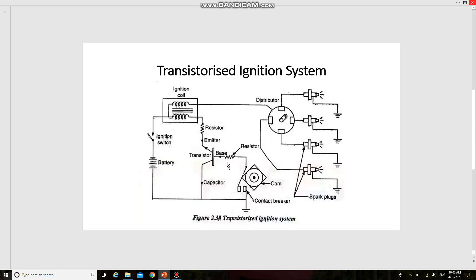It produces a high voltage in the secondary circuit. This high voltage is directed to the respective spark plugs through the rotor of the distributor. The high voltage produces a spark when it tries to jump the spark plug gap. It ignites the air fuel mixture in the cylinder. So this is the working.